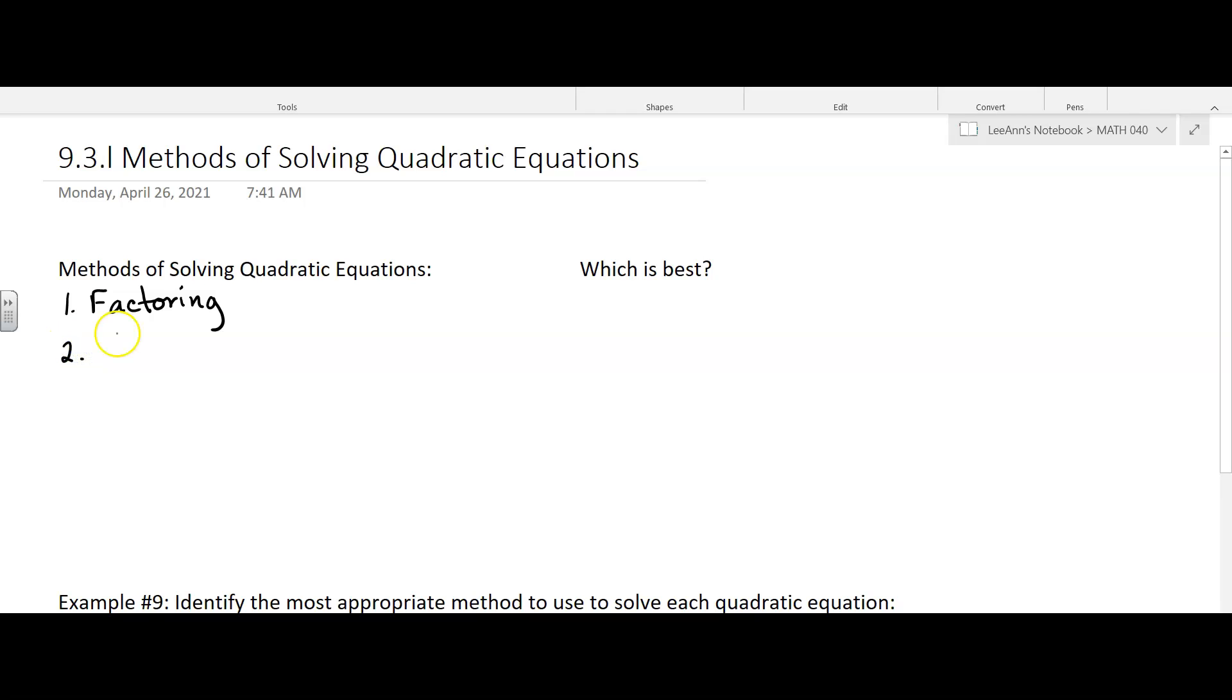The second method we learned in chapter 9, we learned to take the square root of both sides. This really only works if you have something squared, like either you have x squared equals something, or you have x plus b squared equals something.